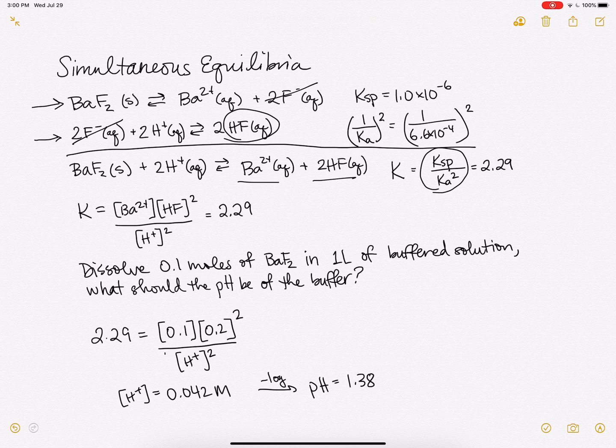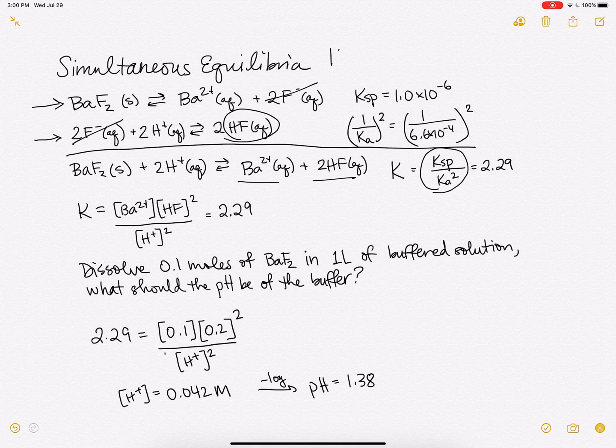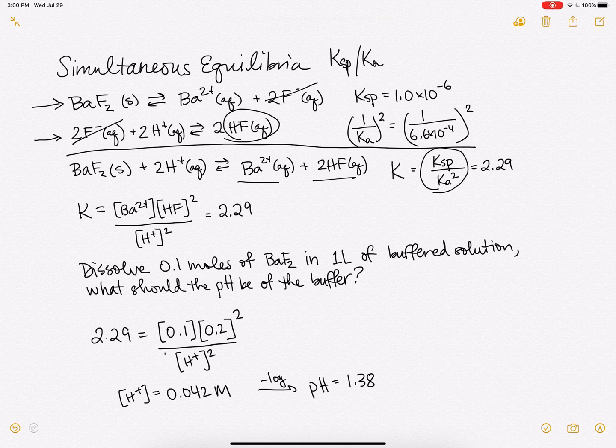This is a simultaneous equilibria for Ksp and Ka. I'm going to make a different video that will have it for Ksp and Kf for a formation constant. Thanks very much.